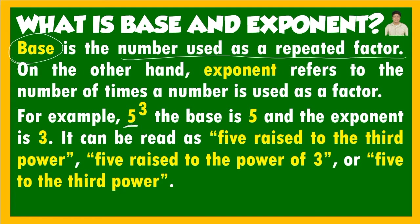How the base repeats depends on its exponent. If the exponent of 5 is 1, it cannot repeat because 5 raised to 1 is equal to 5. But when it is 5 raised to 2, 3, and so on — whatever the exponent or power is — we can see that it is used as a repeated factor. For example, 5 raised to 3 becomes 5 times 5 times 5.